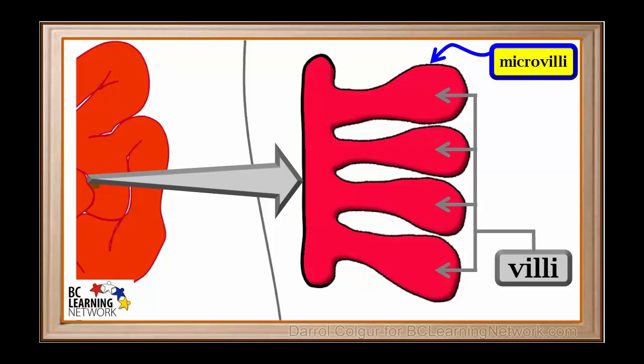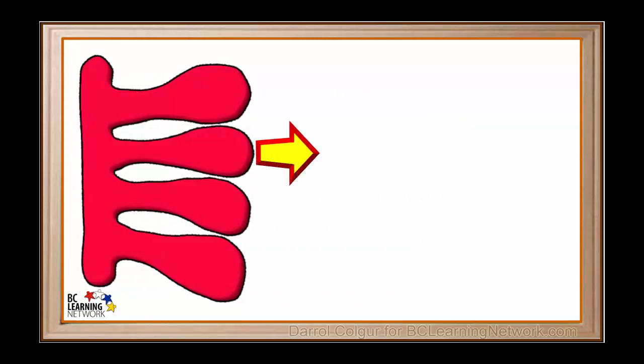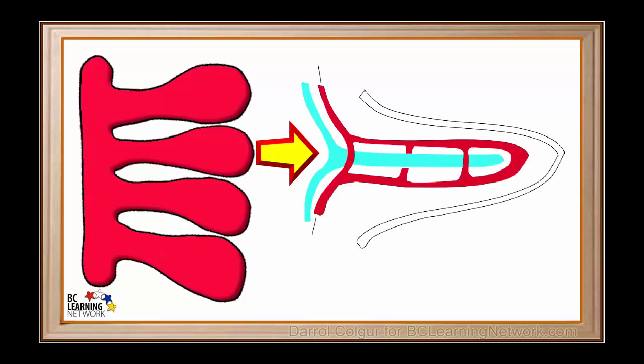The cells covering the inner surface of the small intestine have very tiny hair-like projections. These are called microvilli. The presence of these increase the surface area for absorption of nutrients by another huge factor. Now we'll examine a single villus in more detail.